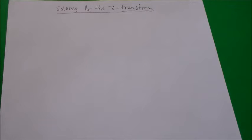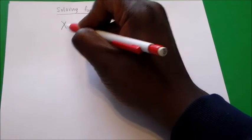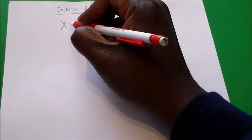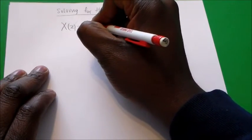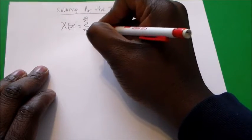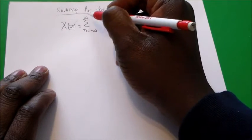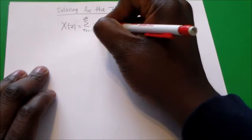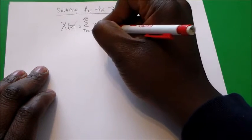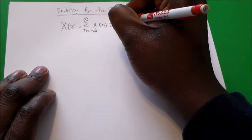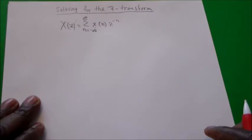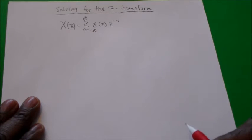So let's continue now with the Z-transform. The definition of the Z-transform is: capital X of Z is equal to the summation from N equals negative infinity to infinity of lowercase x of N, times Z raised to the negative N power. That's the definition of the Z-transform.